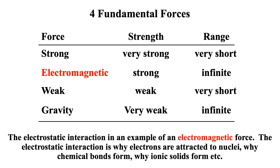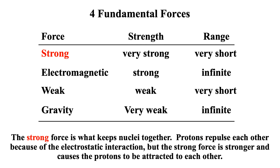Electrons are attracted to the nucleus because of the electrostatic interaction — opposite charged particles attract. Chemical bonds are formed because of electrostatic interaction; ionic solids are formed by electrostatic interaction. Most of chemistry is about the electrostatic interaction, which is part of the electromagnetic force. The nucleus, however, is all about the strong force. A nucleus is composed of protons and neutrons — protons have a positive charge, neutrons are neutral.